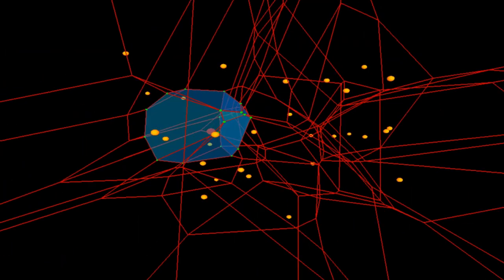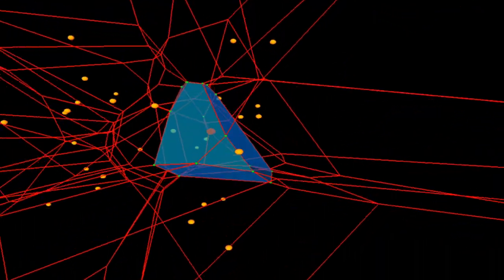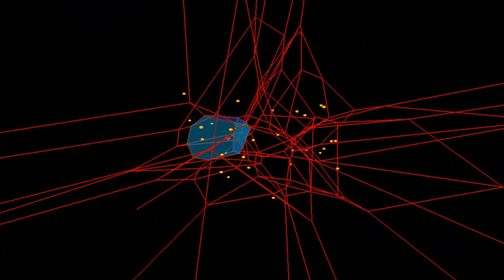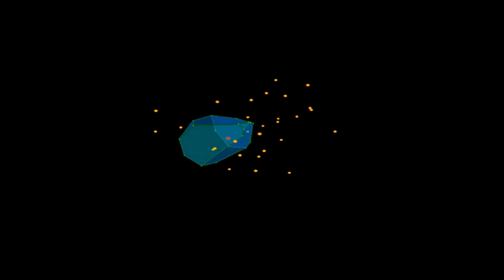Visualizing the 3D Voronoi diagram is difficult, but if we draw only one cell, like you can see here in blueish, you can get a good idea of how it looks like.